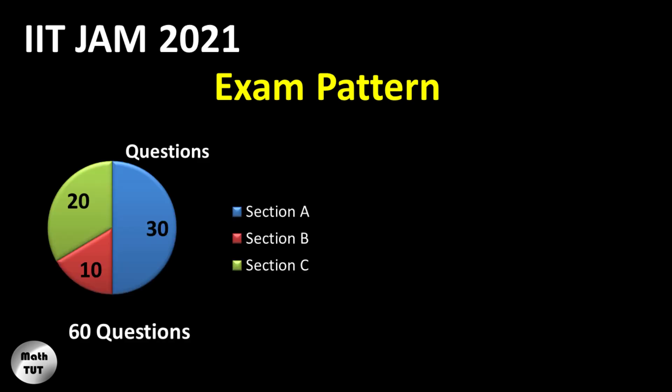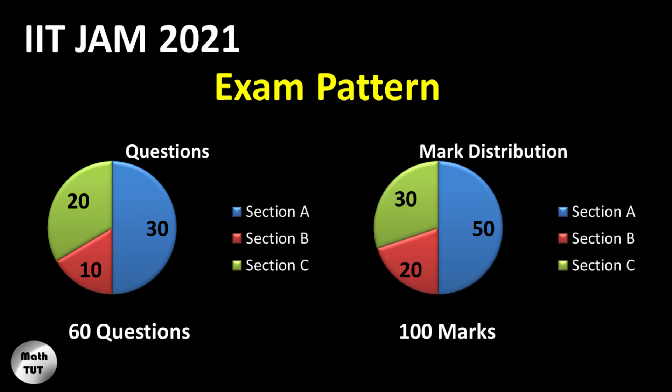If you look here, there are three sections: Section A, B, and C. Section A contains 30 questions, Section B contains 10 questions, and Section C contains 20 questions, making a total of 60 questions. Section A gives you 50 marks, Section B 20 marks, and Section C 30 marks — a total of 100 marks. You also have a three-hour exam.